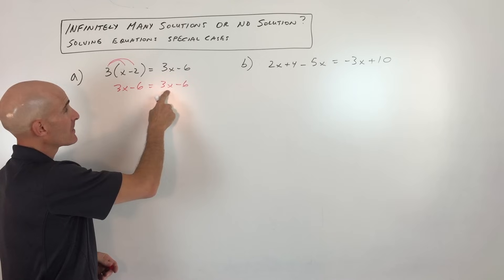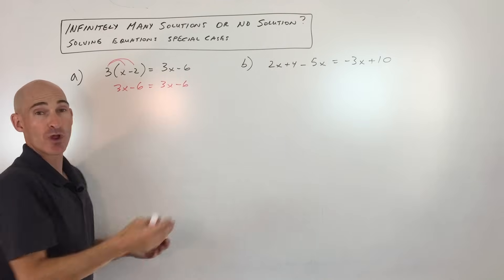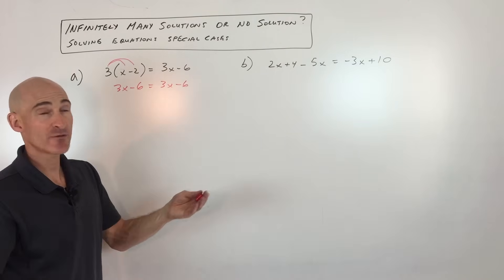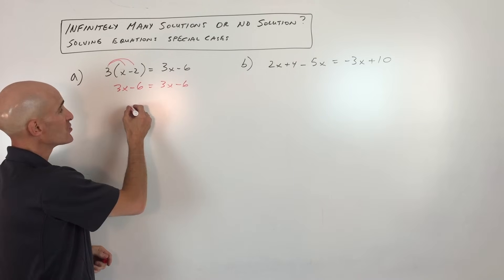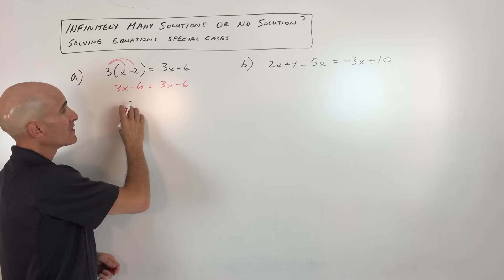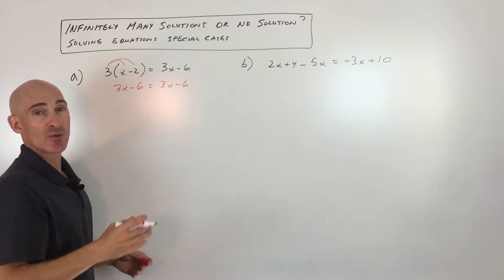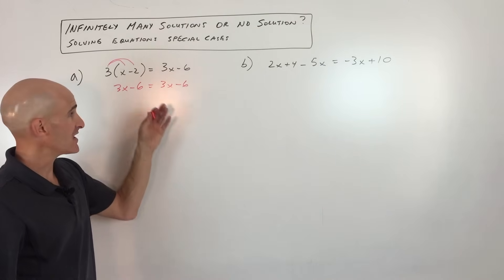Whatever you put in for x, the left side and the right side will always be equal. So no matter what you put in for x, it's going to be true. This means this has an infinite number of solutions. You could say infinitely many, infinite number of solutions, any one of those would work, or you could say it's an identity.